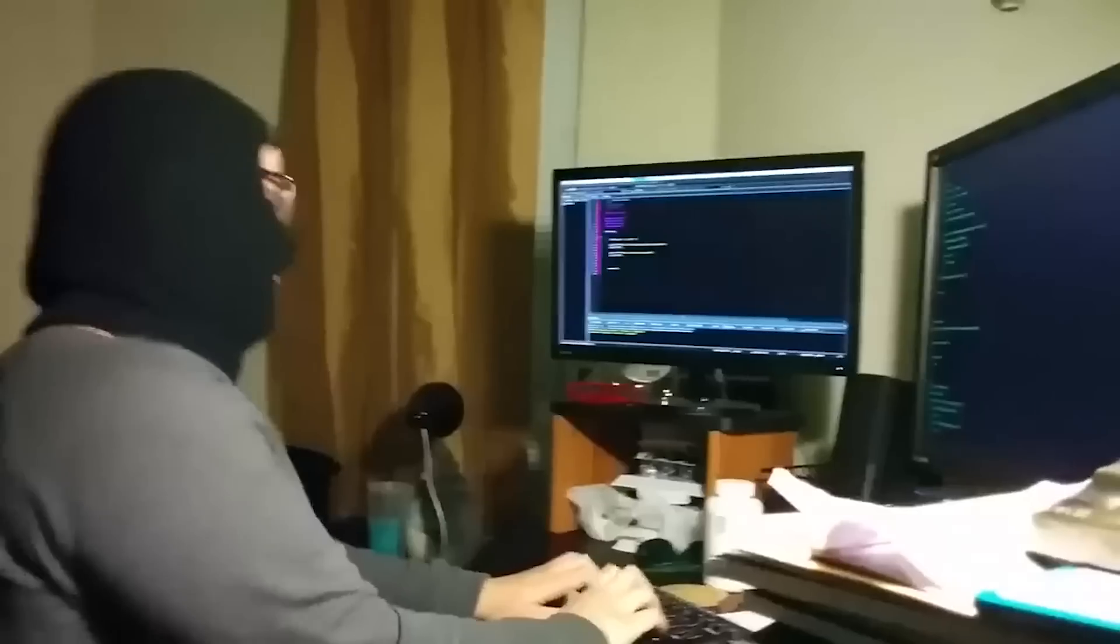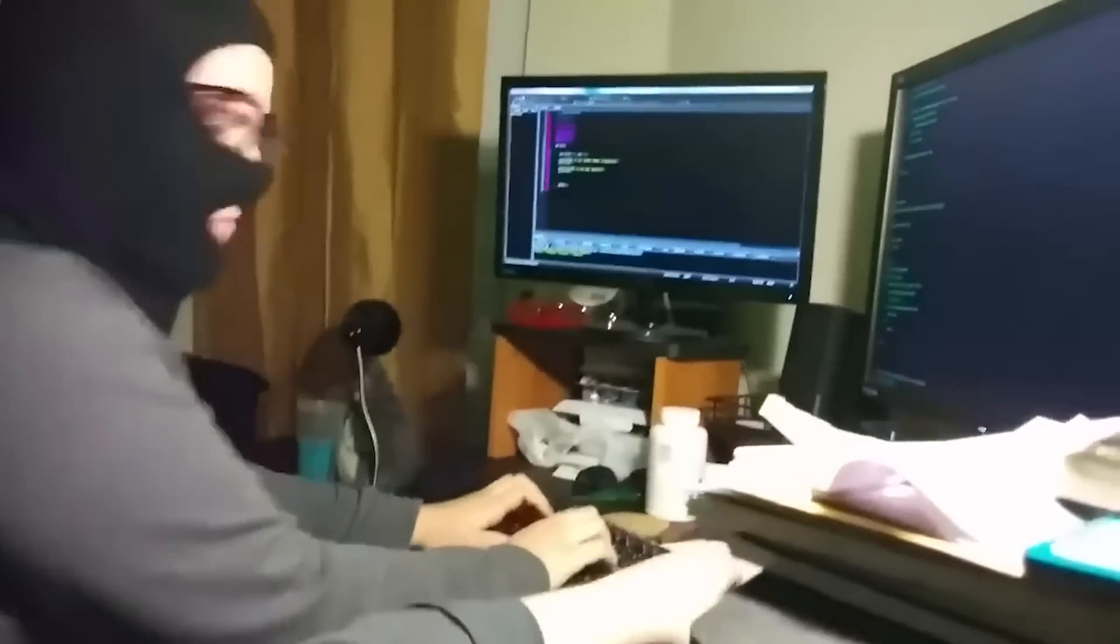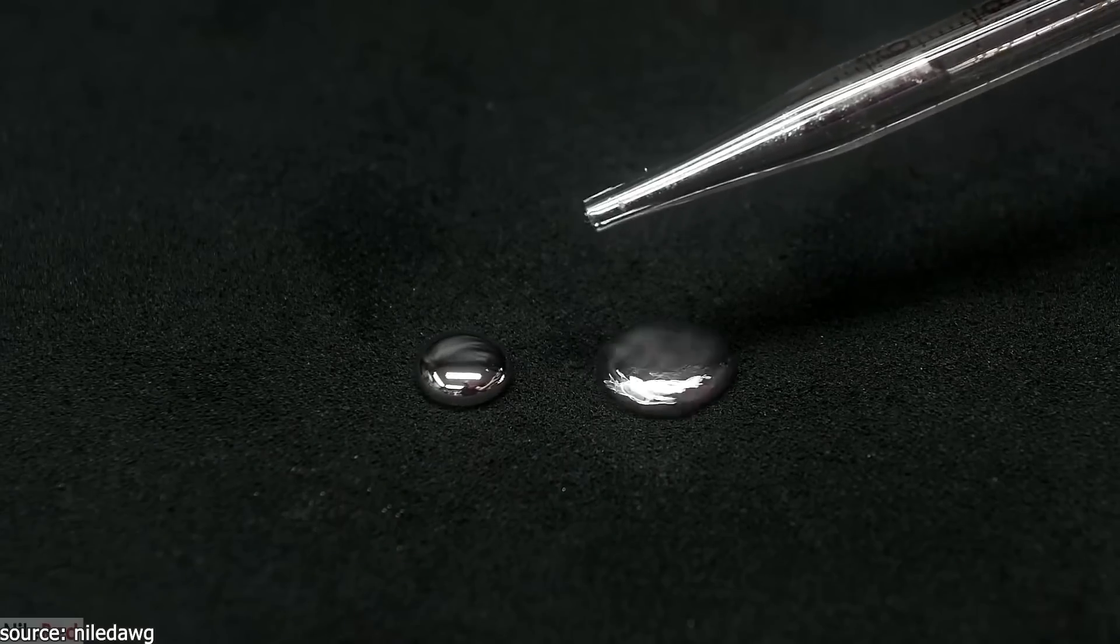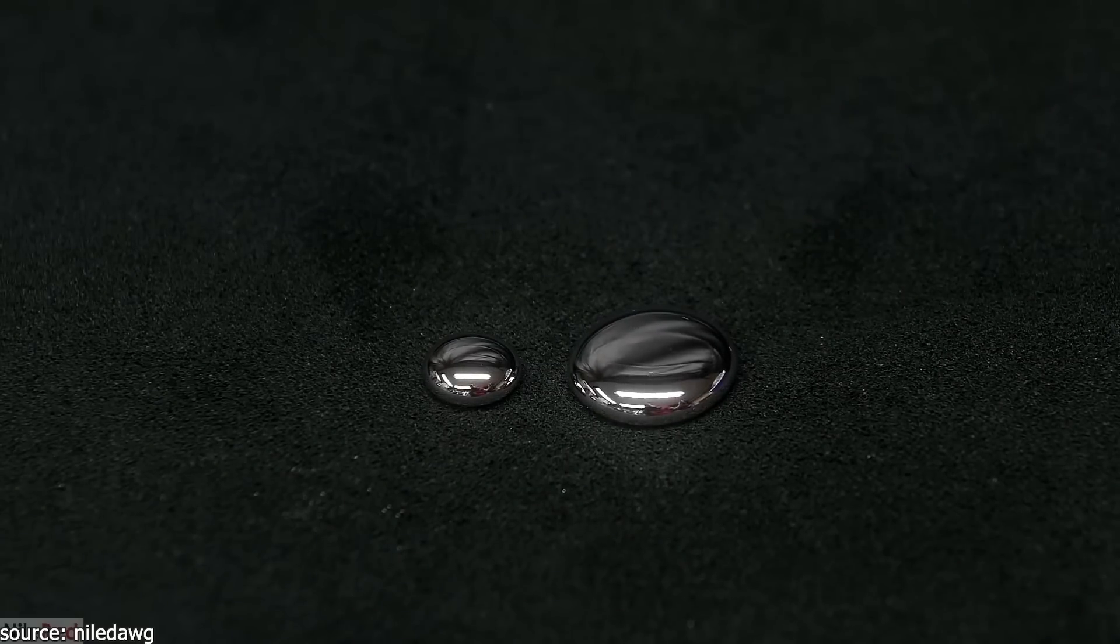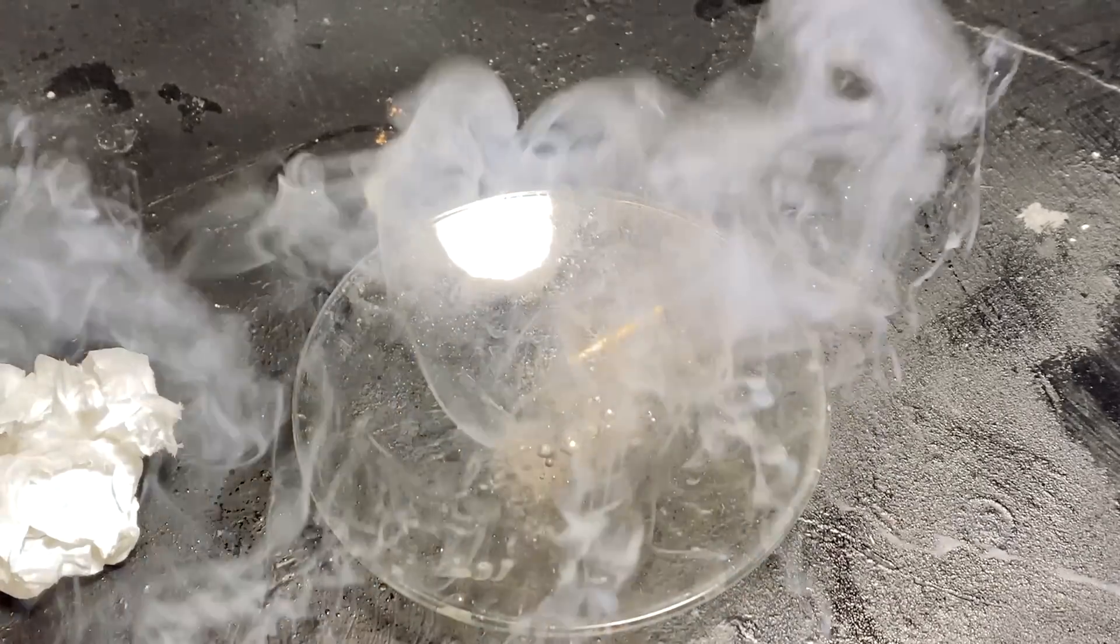Hey guys, your local psyops agent here. Mercury is this cool shiny liquid which can form alloys with most metals to form intermetallic compounds called amalgams, and I'll be demonstrating the more rare and interesting ones I could find.